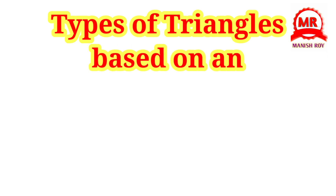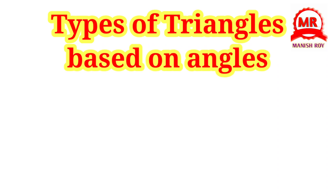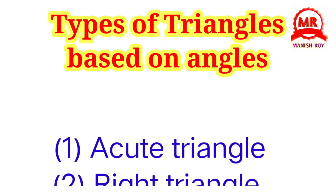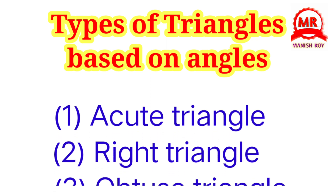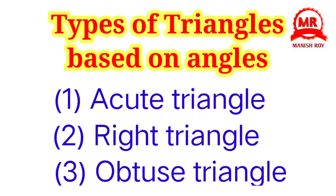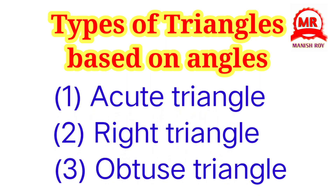Now we will learn about types of triangles based on angles. There are three types of triangles based on angles: acute triangle, right triangle, and obtuse triangle.